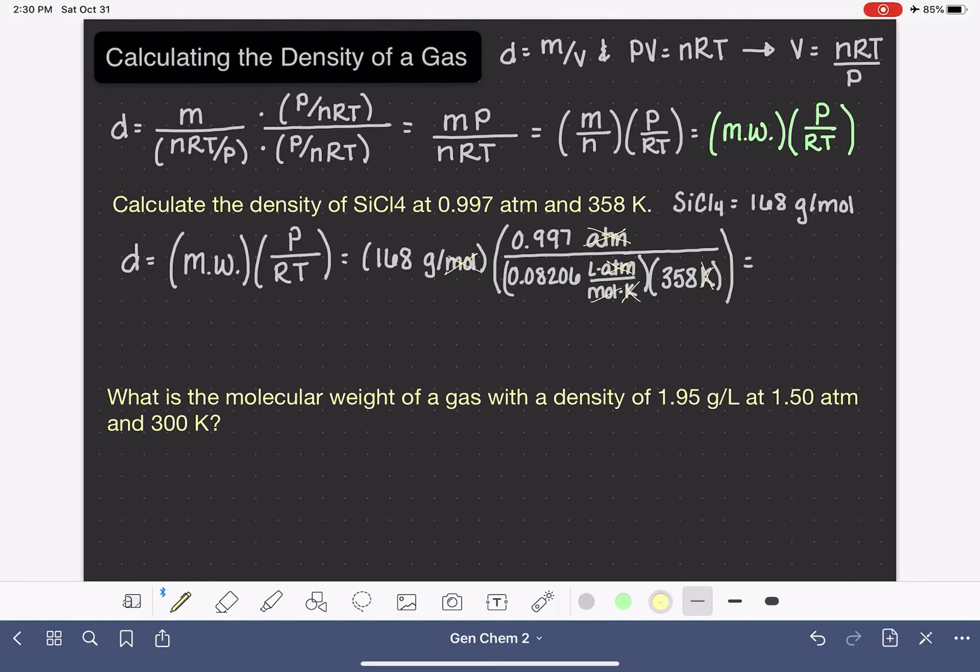Moles will cancel. And when we do the math on this, we're left with units of grams per liter, which is standard unit of density for a gas. This is 5.7 grams per liter.